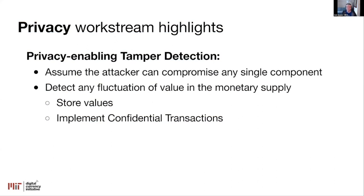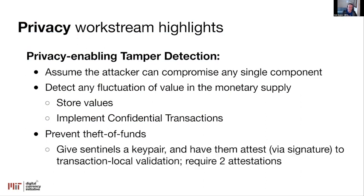Both of these are still undergoing testing to figure out their performance implications, which is why they haven't officially been merged into the repository yet, but both designs are open source and available to review. For the second goal — preventing theft of funds — making sure no one can artificially inflate or deflate the monetary supply is incredibly important, and we also want to make sure no one can just take your money outside of the transaction. This is actually pretty easy to do. The short version is that you give the Sentinel components a cryptographic key pair, and when they perform that compaction they attest to the validation — they attest that the transaction is valid and balanced — and sign off with their key pair. To meet our threat model, we only have to require two of these attestations. Every component inside the transaction processor verifies the attestations and makes sure the right number was supplied, which completely prevents theft of funds.